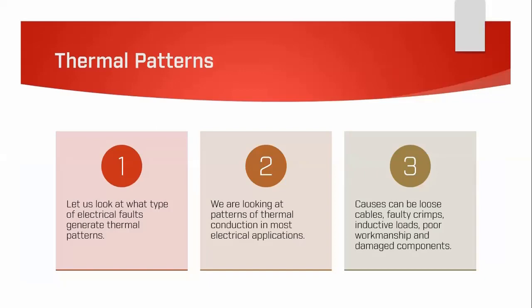The first thing we need to understand is what type of thermal patterns we're looking at. Thermal patterns show areas within electrical installations that might be defective — we can detect high resistance joints, imbalanced phases, faulty crimps, and even poor workmanship and design. Primarily we are looking at patterns of conduction, one example being a thermal gradient — a changing temperature over distance.